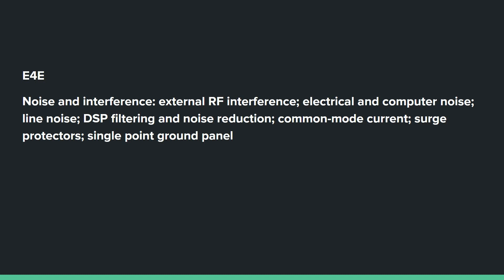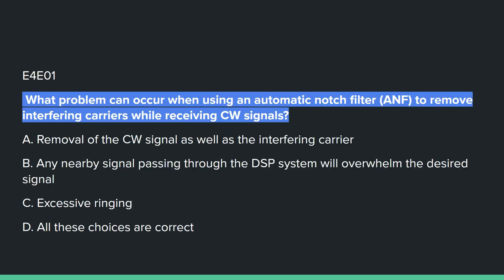E4E covers noise and interference: external RF interference, electrical and computer noise, line noise, DSP filtering and noise reduction, common mode current, surge protectors, and single point ground plane.